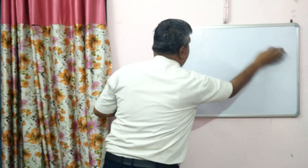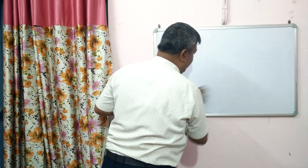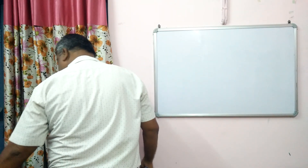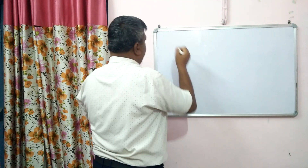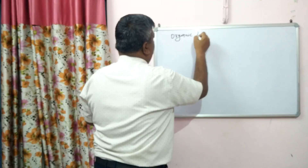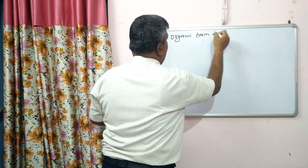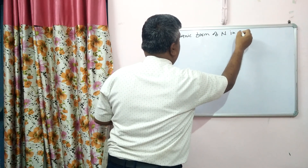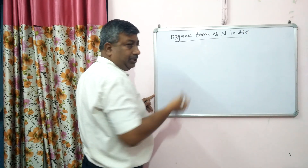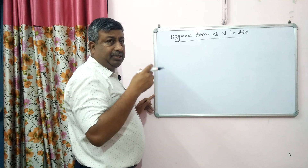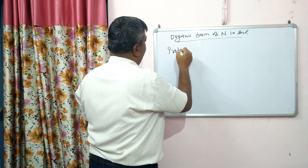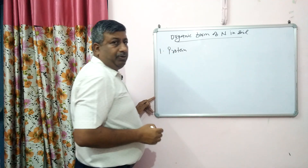In the plant, organic forms of nitrogen include chlorophyll, DNA, RNA, enzymes, and proteins. Since the nitrogen in soil comes from the plant, and in the plant it is present in the form of protein, the first organic form in soil is protein.